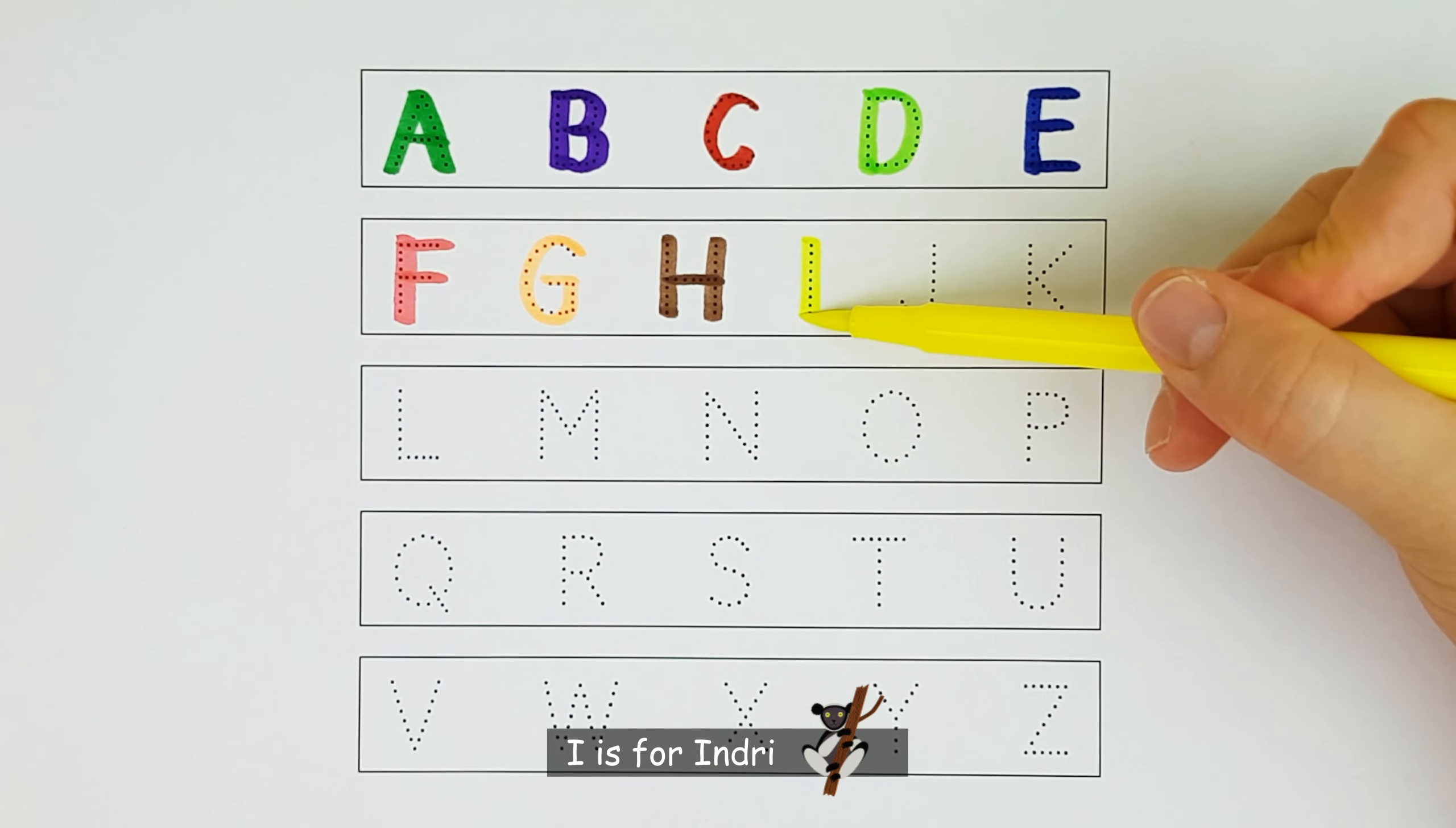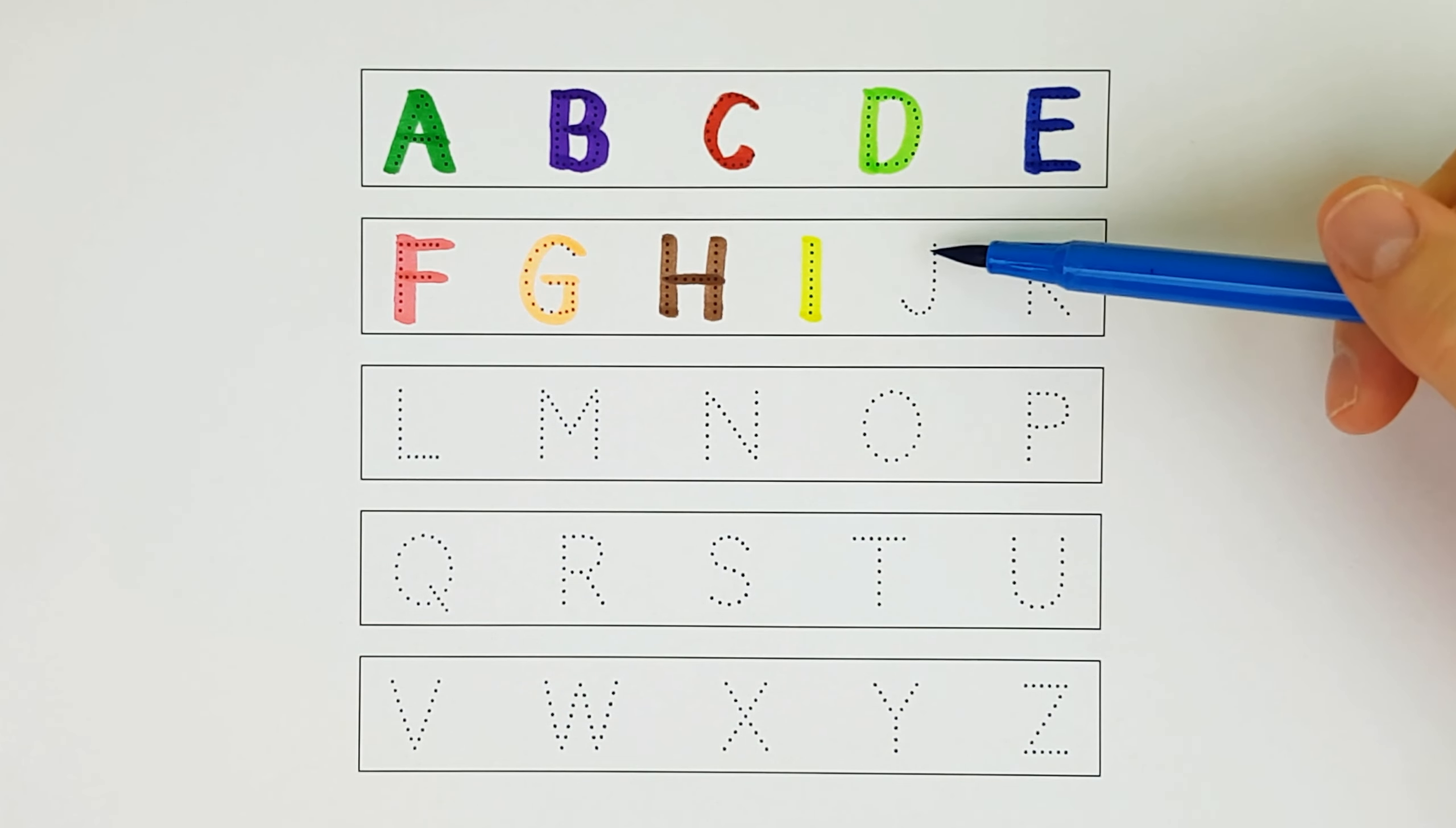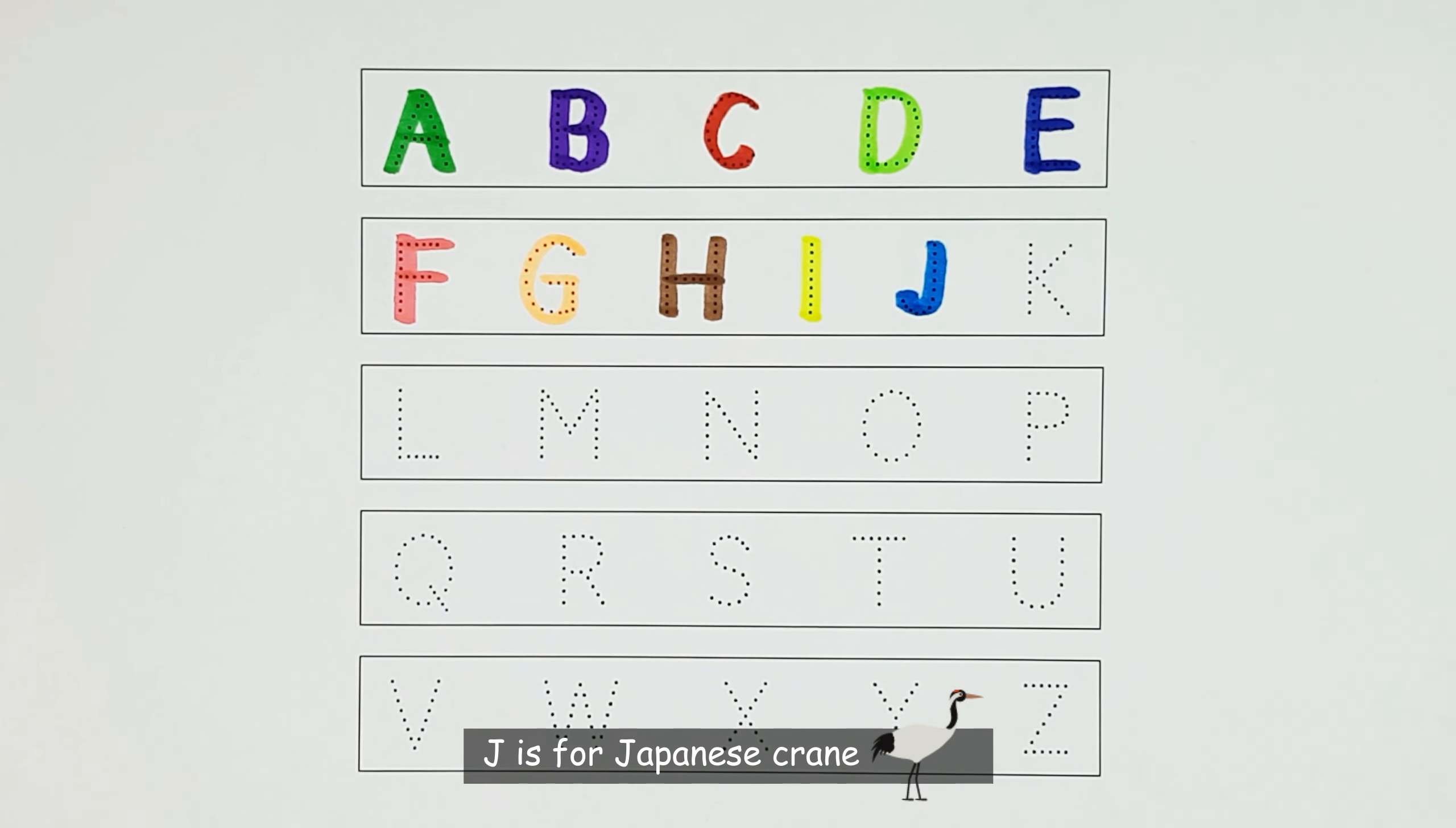I. I is for Injury. I. J. J is for Japanese Crane. J.